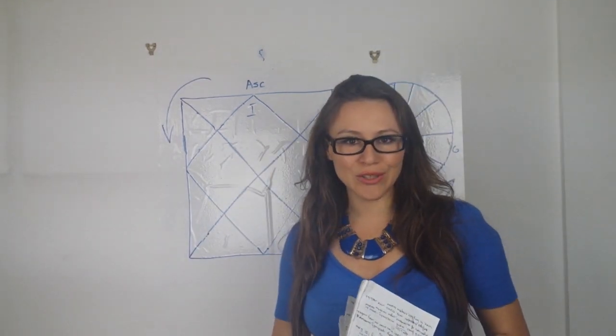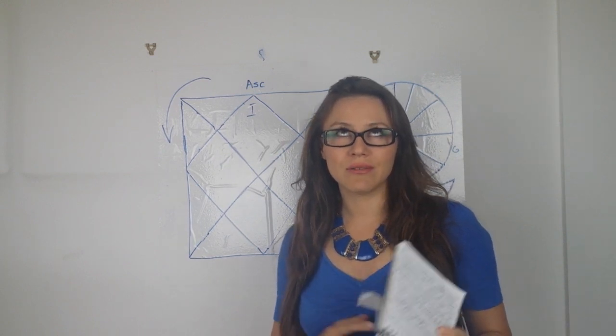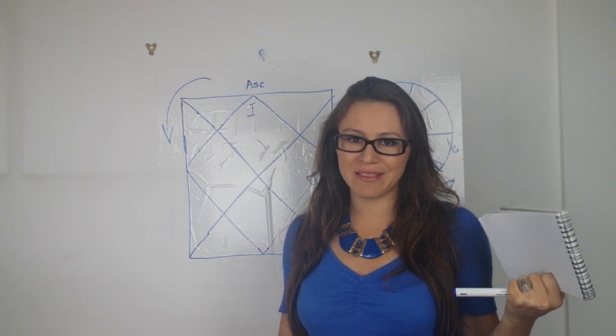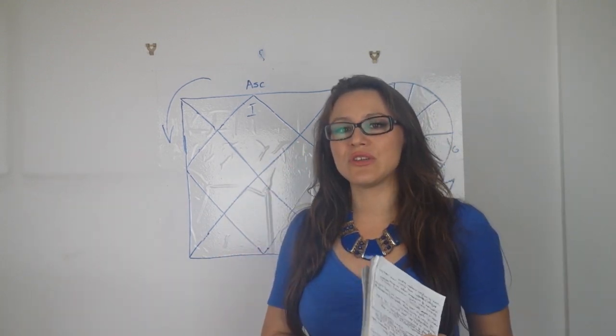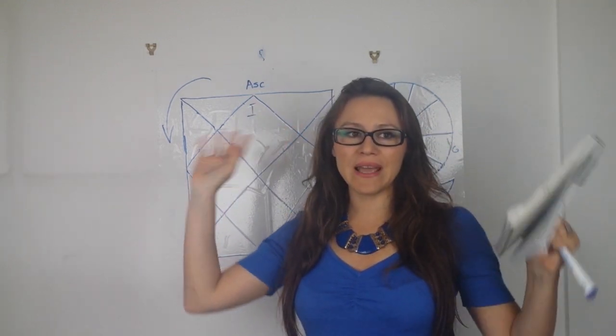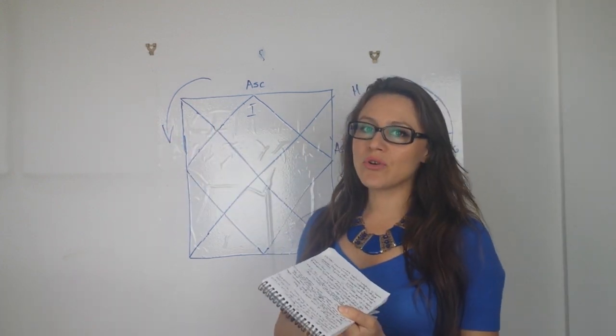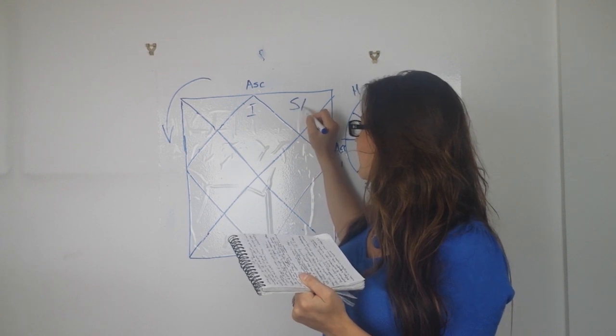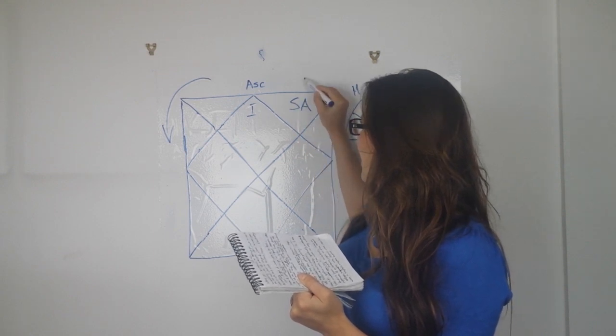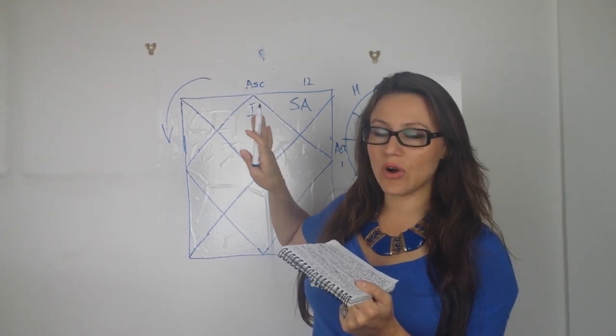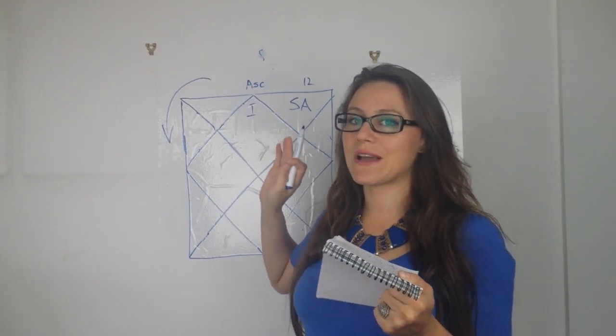Go to my website astrolada.com where I have a birth chart calculator. There is a link below this video taking you straight there. Enter your place, time of birth, all the details and you'll get a chart like that. I want you to see if Saturn is situated here, this is the 12th sign from the ascendant.